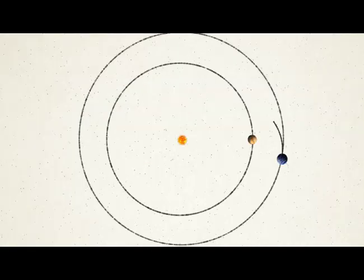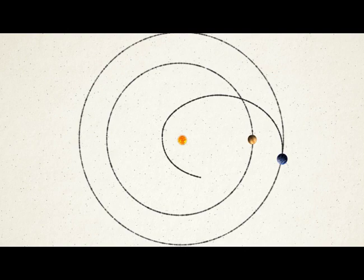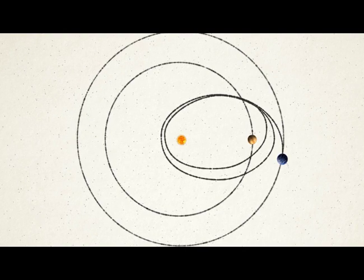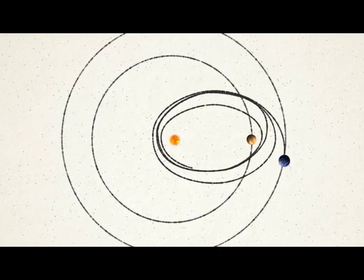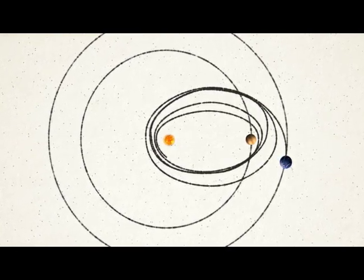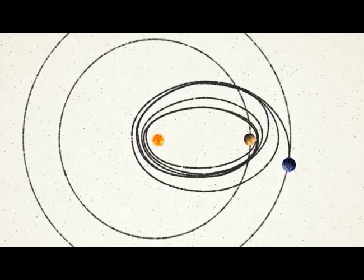Since Parker Solar Probe plans to fly past the Sun, it doesn't need to cancel out all of Earth's sideways speed, but it does need to remove 53,000 miles per hour of it. That's why it's using one of the most powerful rockets available, and additional gravity assists from Venus over a period of several years.